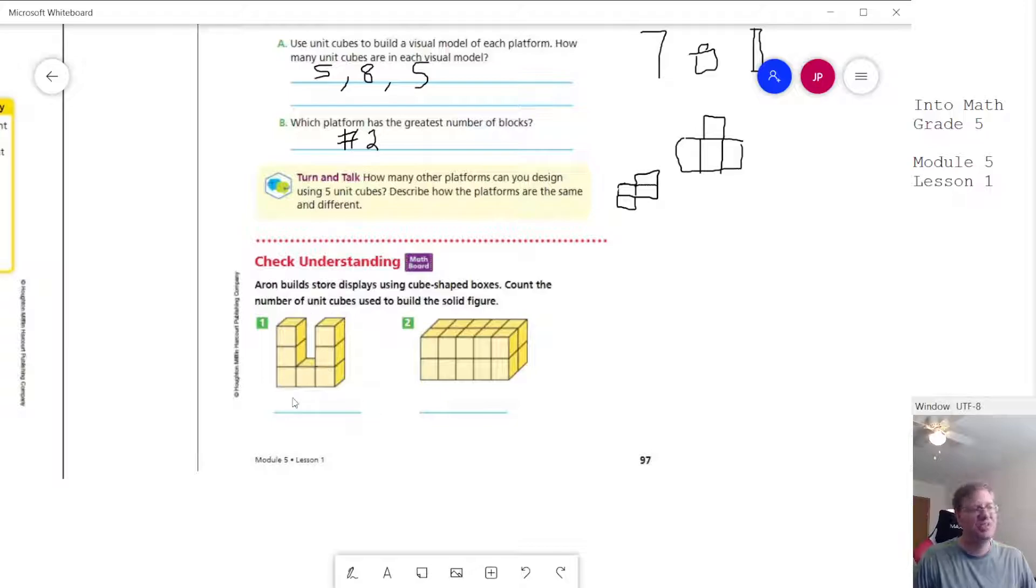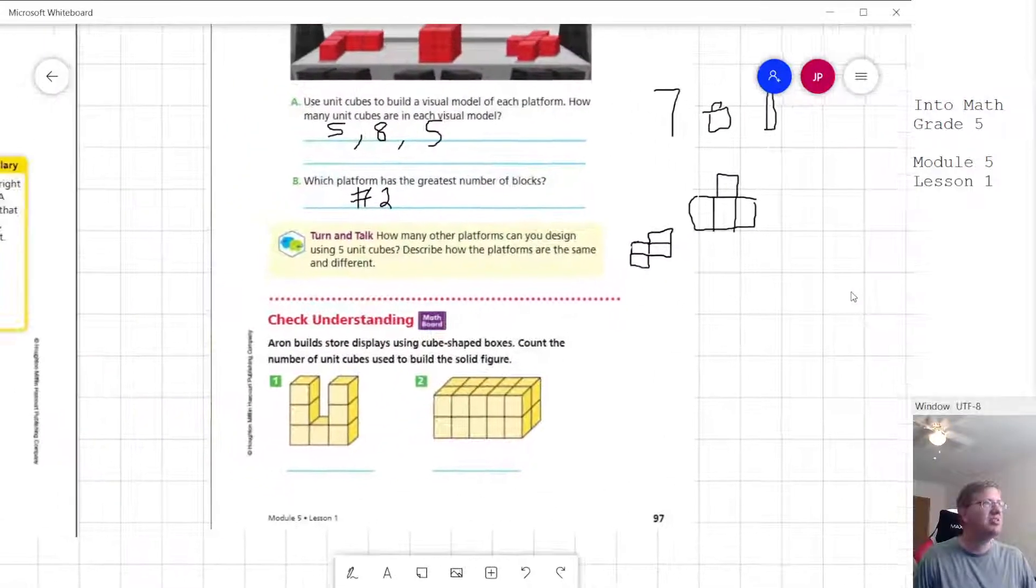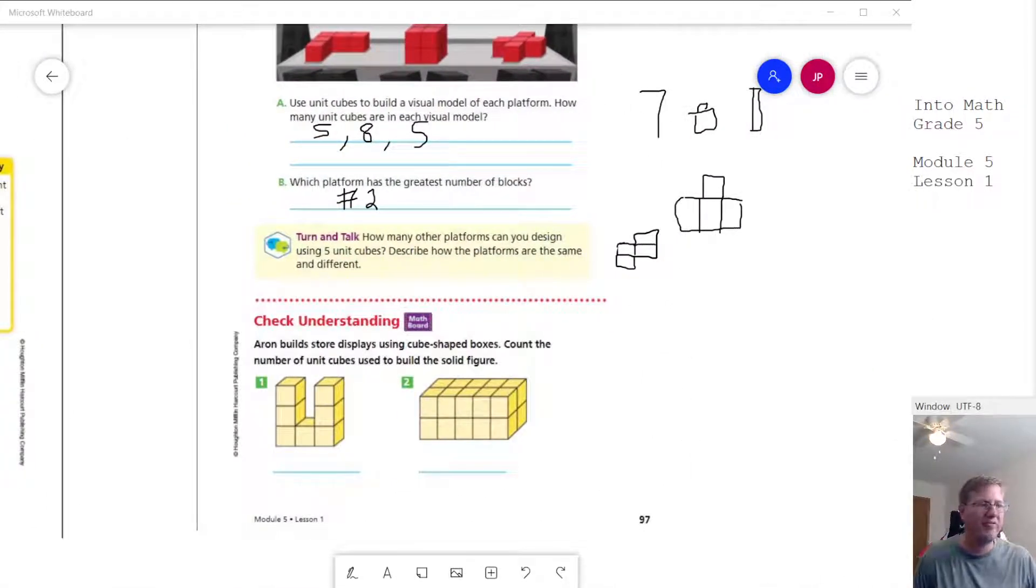And then, of course, we would just count the squares that we see for each of these. So that should be pretty easy. This is not the lesson I'm showing the homework for. I will do that for the next one.